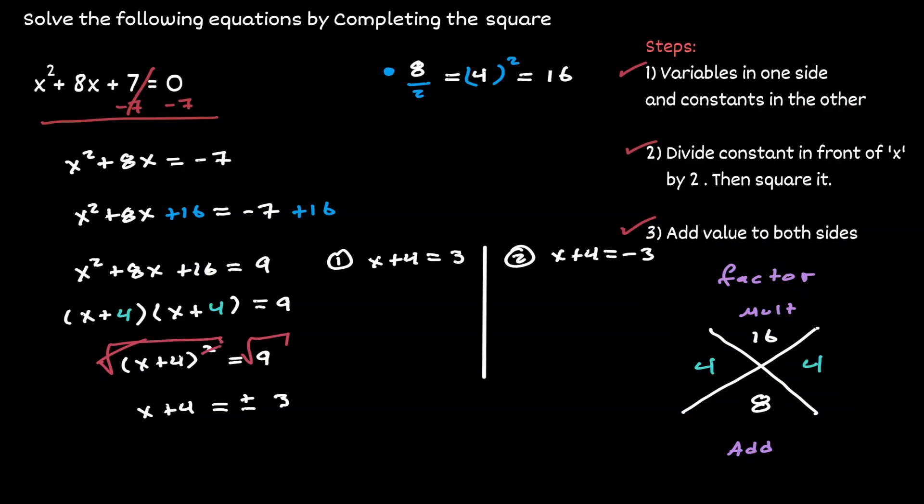And at this point, we solve them individually. In our first equation, to solve for x, let's subtract 4. And now we know that x is equivalent to negative 1. And on the right hand side, let's subtract 4 as well. And now we're going to get that x is equivalent to negative 7.